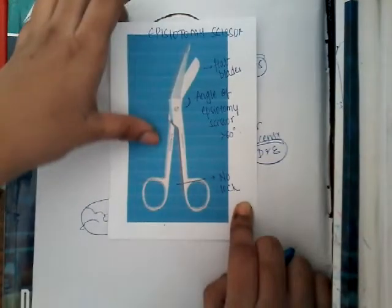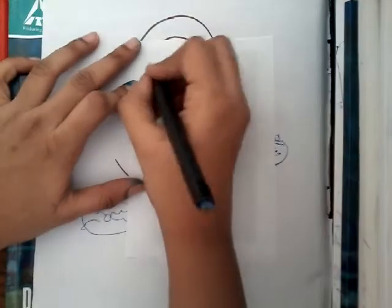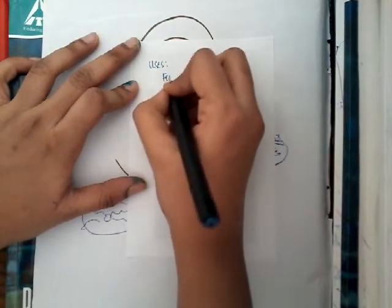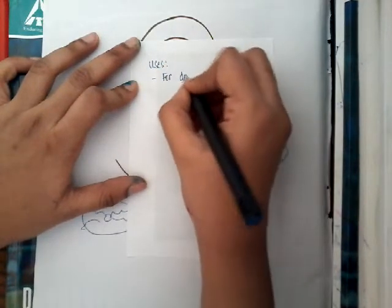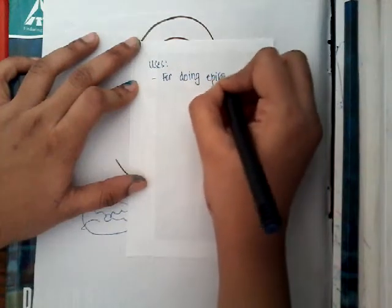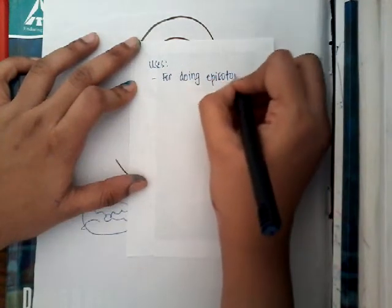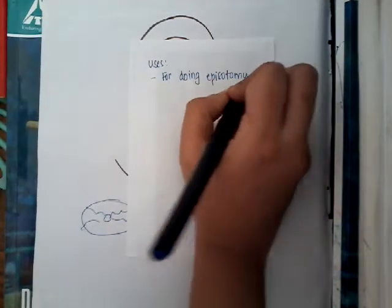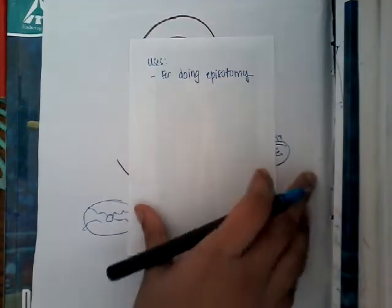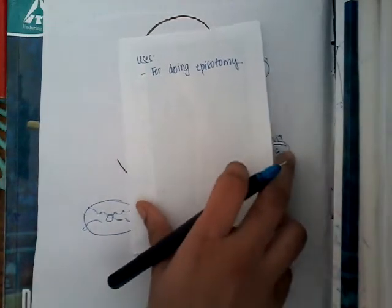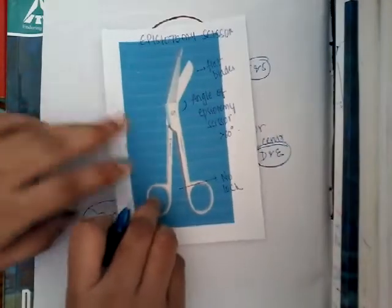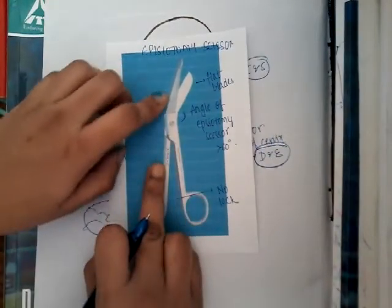What are the uses? The use is for doing episiotomy — simple, there is no other use other than for doing episiotomy. Mostly we use this episiotomy scissors for doing episiotomy. It has two edges: one is a blunt edge and the other is sharp.